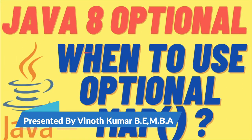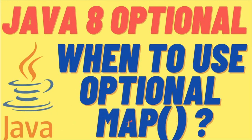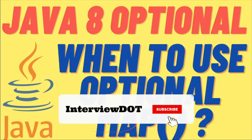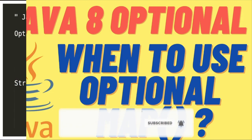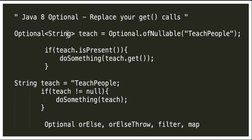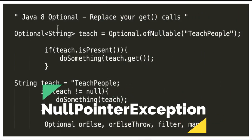In this video I'm going to talk about one of the Java interview questions: when to use the Optional map API, when to use the get method, and when to use the map method instead. Let's see some code examples. The main reason for introducing Optional in Java 8 was to avoid NullPointerException.